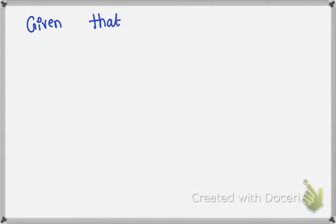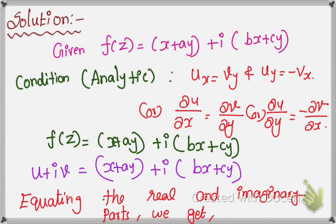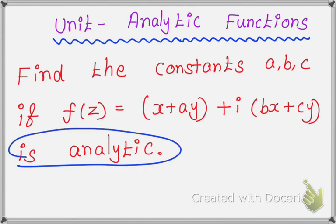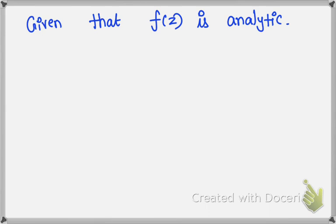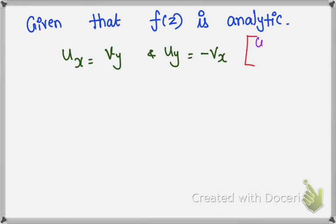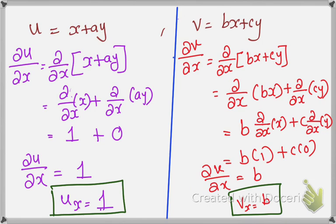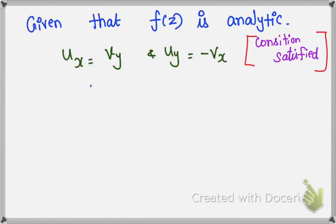Now we are going to apply the Cauchy-Riemann conditions. The given function is analytic, so the conditions ux = vy and uy = minus vx must be satisfied. Applying ux = vy: ux is 1 and vy is c, so 1 = c. Therefore c = 1.